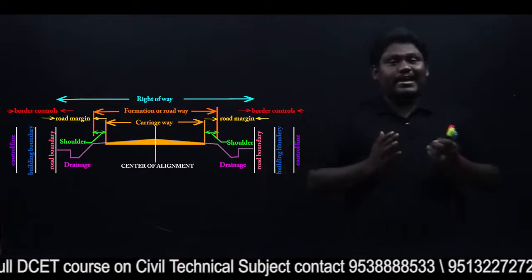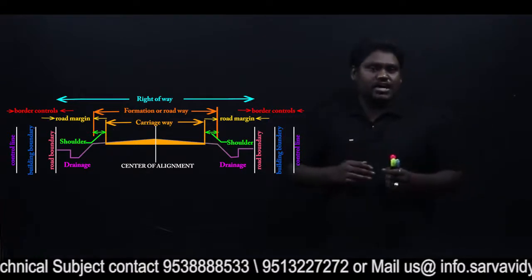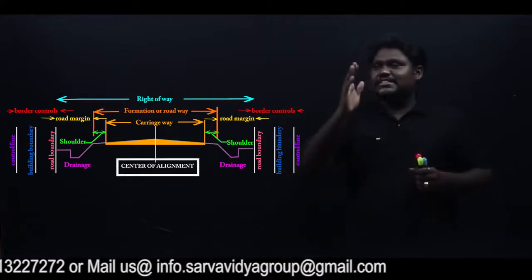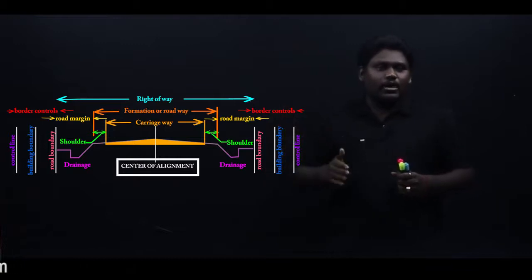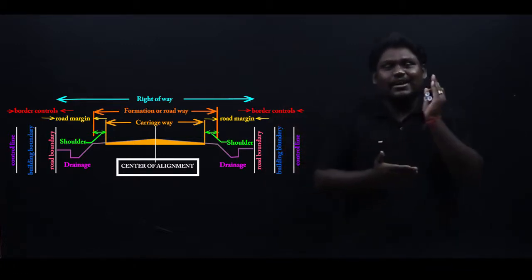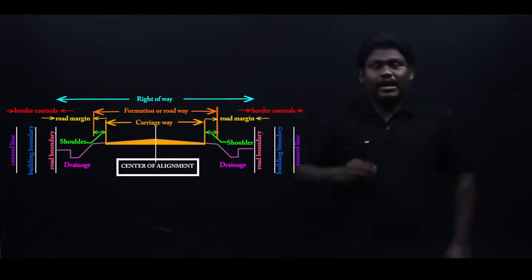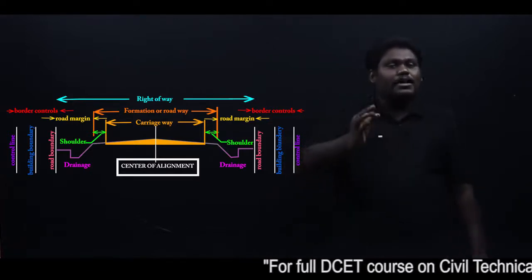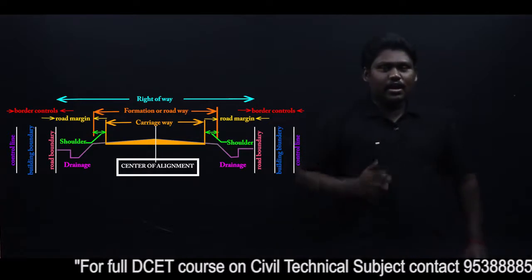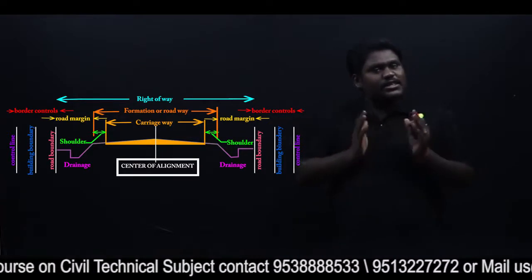Let me start with the center line. What is the center line of the road? As the word suggests, it is the exact center of alignment - it is not the center of the road, but the center of alignment of any roadway. What is the difference between center of road and center of alignment?